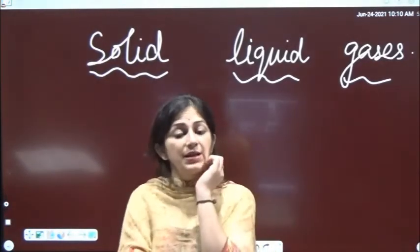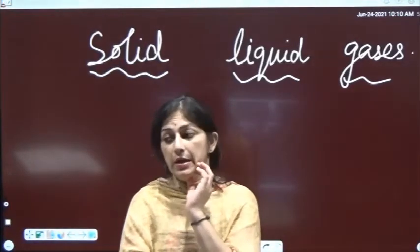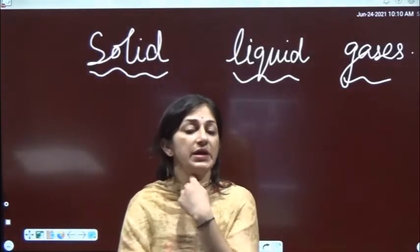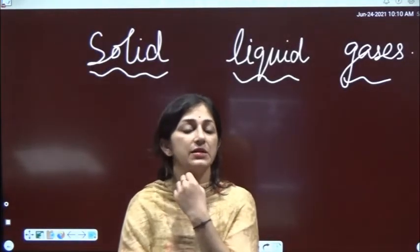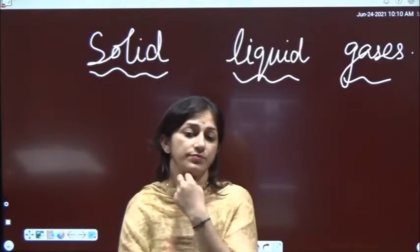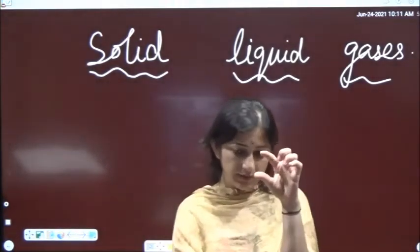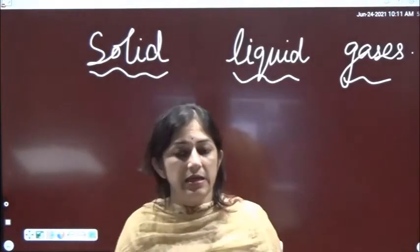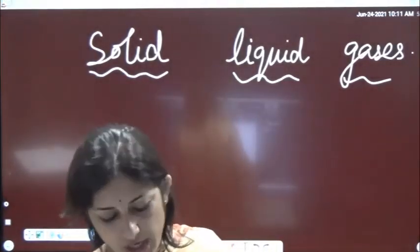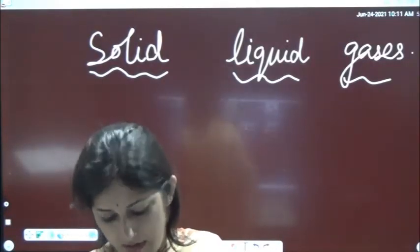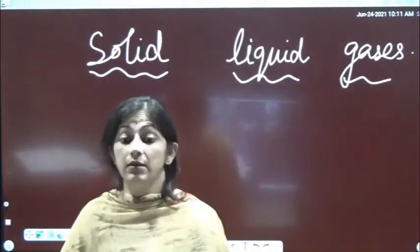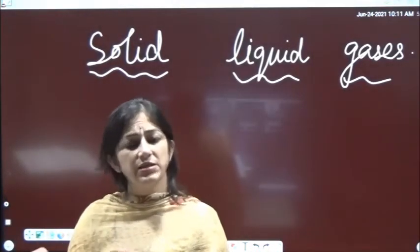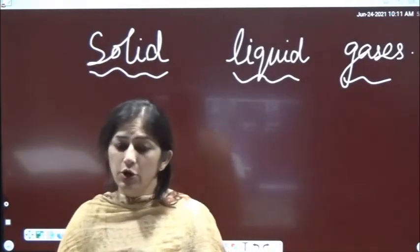Now let's talk about liquids. If we talk about the shape of a liquid - is its shape definite? The shape of liquid is not definite. Volume is definite though. If I have taken 100 ml of water in a glass, it will take the shape of the glass. If I transfer that water into a bowl, the water will take the shape of that bowl. So whichever container you pour it into, it takes that shape. Volume is fixed, but shape is not.